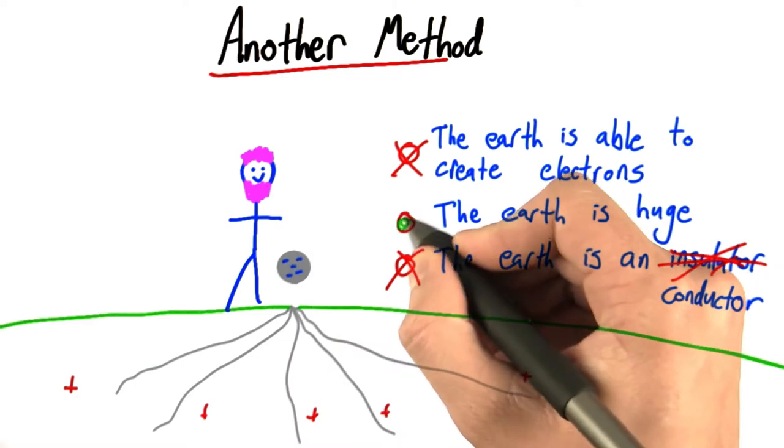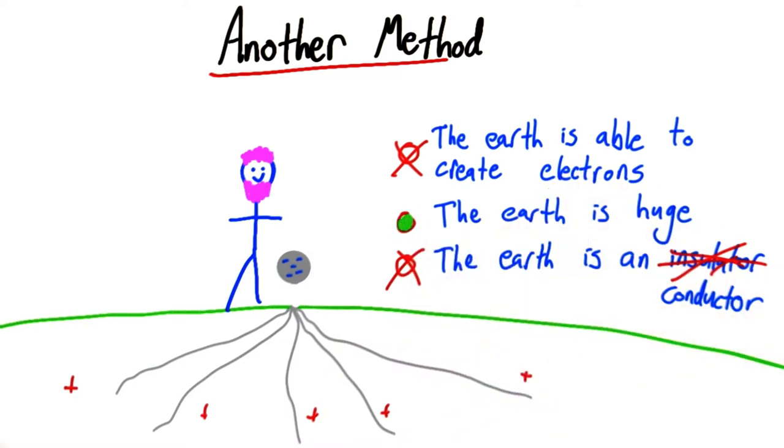The truth is, part of the reason why we can do this is because the Earth is just gigantic. So what if I take a few negative charges from the Earth? Eventually, they'll probably wind up back in the Earth.